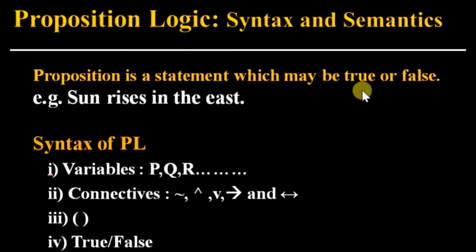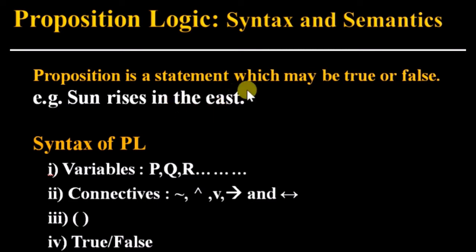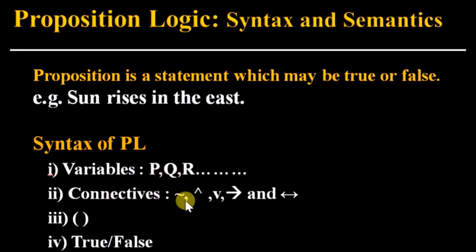A proposition is a statement which may be true or false. For example, 'the sun rises in the east' is true, so this sentence is a proposition. We can represent propositions using propositional logic. The syntax includes variables to represent unique sentences, and five connectives: negation, AND, OR, implication, and equivalence. We can also use parentheses, and the constants true and false.